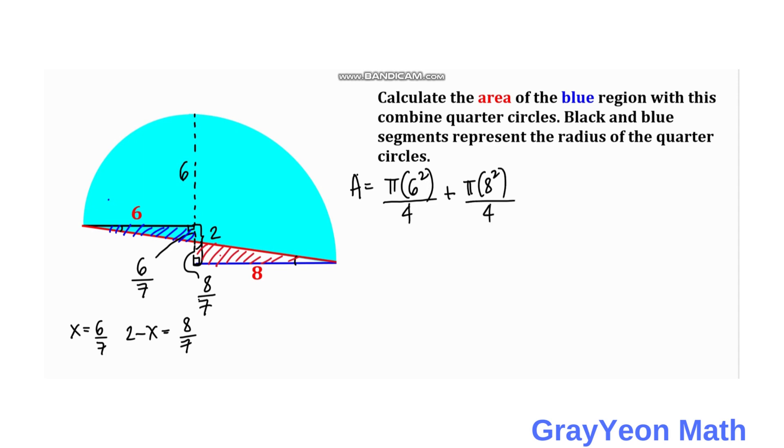We need to add this smaller triangle, that is plus 1/2 times the base, 6/7, times the height which is 6. And the other one: 1/2, but we need to deduct this because it is unshaded, so minus 1/2 times 8/7 times 8.